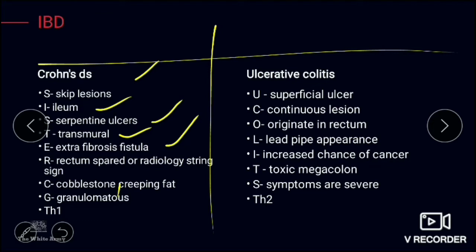Crohn's disease features non-caseating granuloma, and TH1 subtype cells are responsible for this type of inflammation. To summarize the mnemonic: Skip lesions, Ileum, Serpentine ulcer, Transmural, Extra fibrosis/fistula, Rectum spared, Cobblestone appearance, Creeping fat, non-caseating granuloma, and TH1.